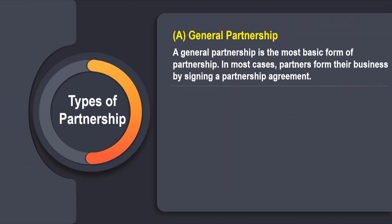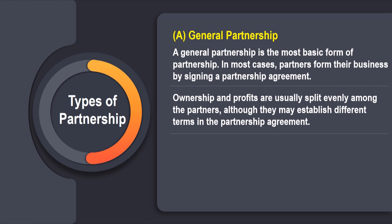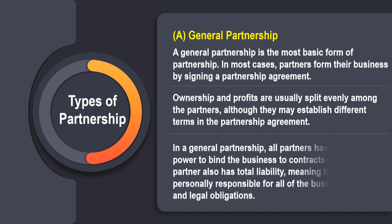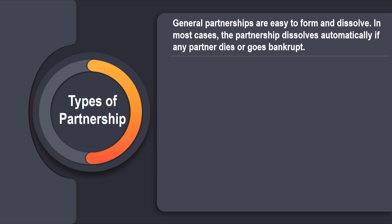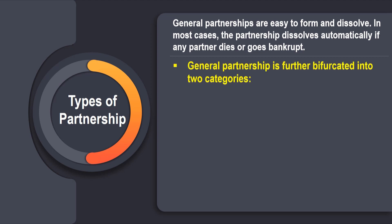The first type of partnership is a general partnership, which is the most basic form. In most cases, partners form their business by signing a partnership agreement. Ownership and profits are usually split evenly among the partners, although they may establish different terms in the agreement. In a general partnership, all partners have independent powers to bind the business to contracts and loans, and each partner has total liability — meaning they are personally responsible for all business debts and legal obligations. General partnerships are easy to form and dissolve; in most cases, the partnership dissolves automatically if any partner dies or goes bankrupt.